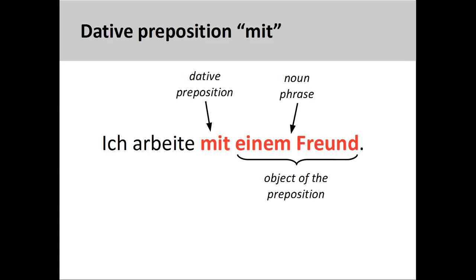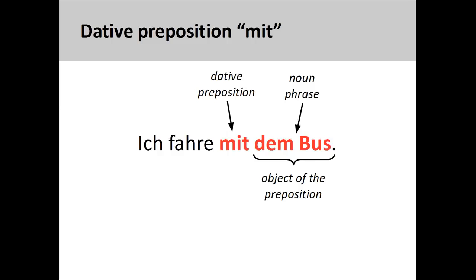The preposition 'mit' is similar to the English preposition 'with.' For example, 'ich arbeite mit einem Freund' — I am working with a friend. Here there is no definite article in the noun phrase, but the dative case is indicated by the strong adjective ending '-em.' In this and all following slides, I will indicate both the dative preposition and the object of this preposition, which together make the dative prepositional phrase. The preposition can also be used to describe the mode of transportation, as in 'ich fahre mit dem Bus' — I am traveling by bus.